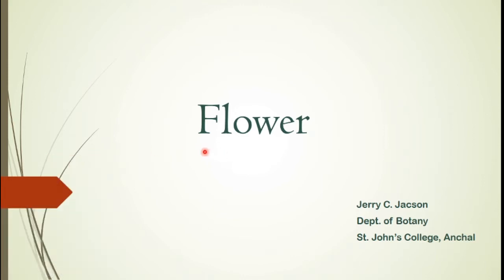The flower is the reproductive structure of a plant and is responsible for producing the next generation in a group of plants called angiosperms. The term 'angio' means to cover and 'sperma' is seed, and so in angiosperms this structure — the flower — is responsible for reproduction.